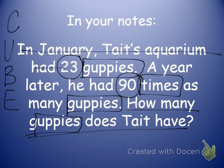Eliminate any information I don't need. I don't really need to know that it was a year later. And I don't need to know that it was Tate's aquarium. So the problem I'm going to be solving today is going to be 23 times 90.